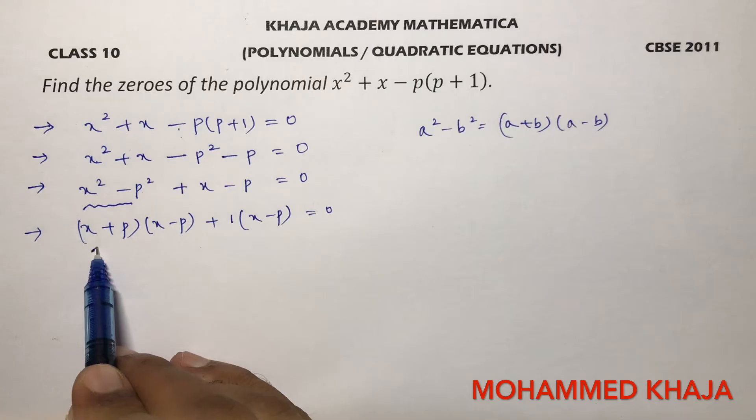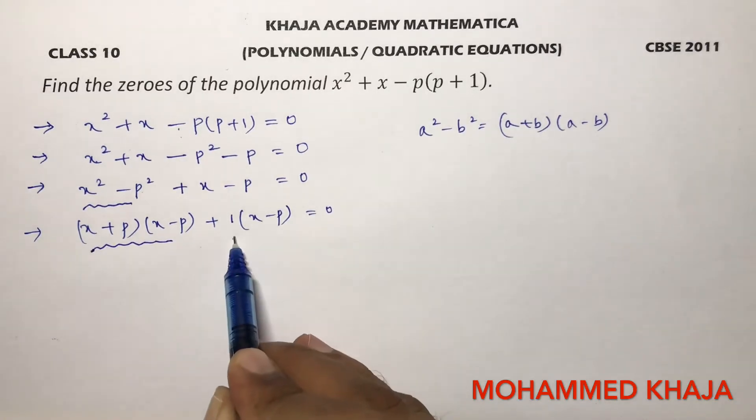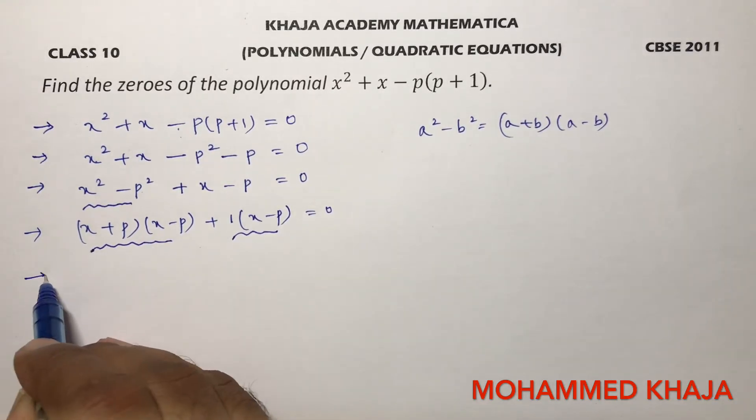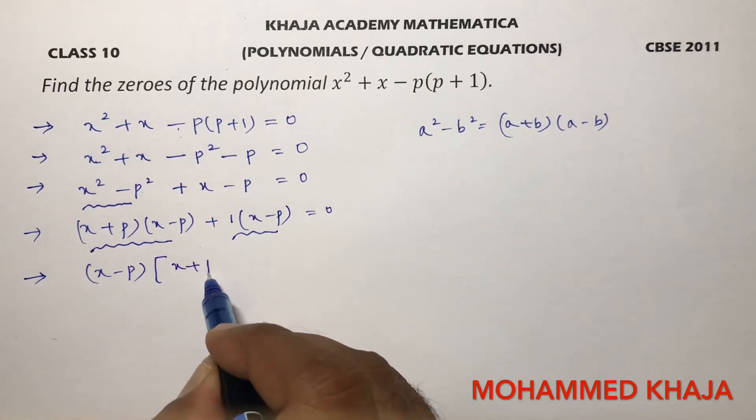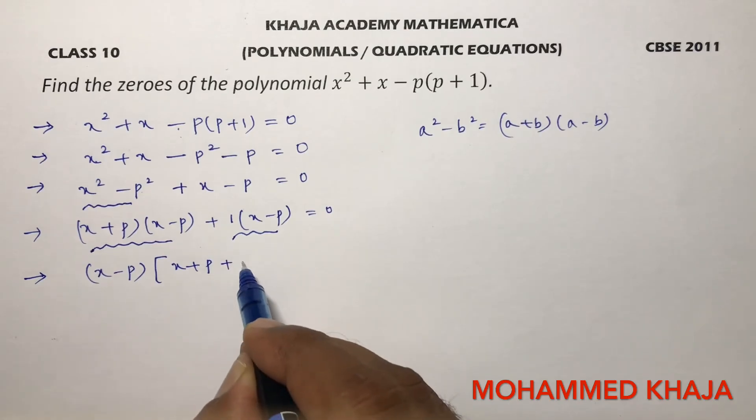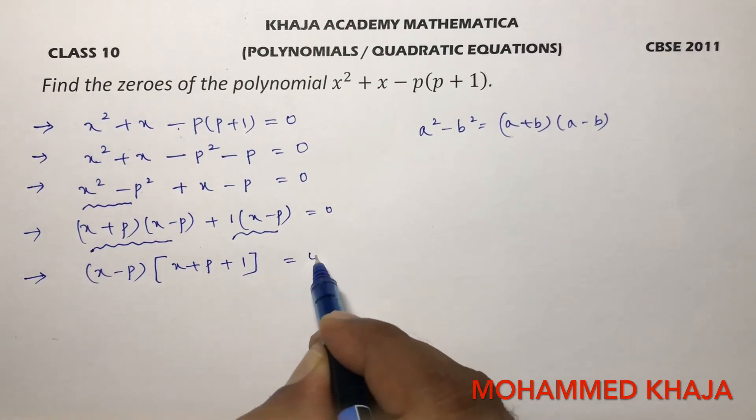Now if you will see these two terms, this one and this one, in this we can take x minus p common. So if you will take x minus p common, here you will be left with x plus p and here plus 1 equals 0.